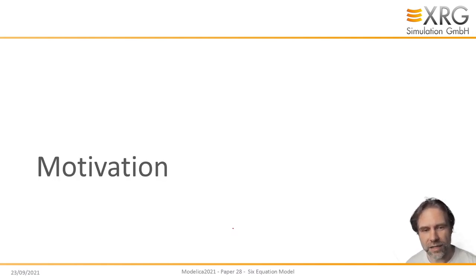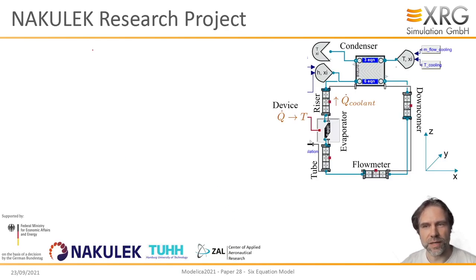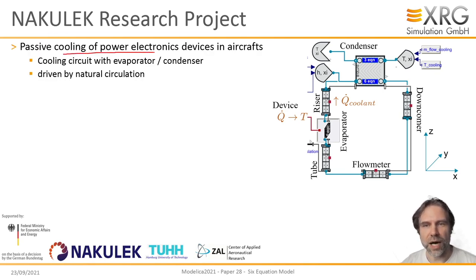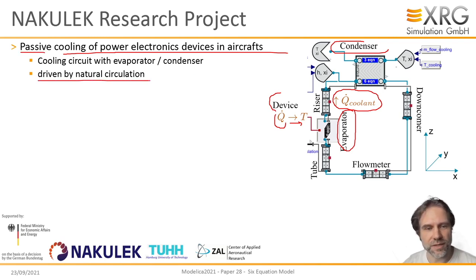So, why should we model two-phase flow in more detail in a system model? The motivation comes from a research project called NAKULEK. This is about the cooling of power electronic devices in aircrafts. You have this classical setting of a cooling circuit with some device emitting heat during operation, exposing temperature to the evaporator, and then the coolant mass flow transports the heat. That device is thought to be passive, meaning driven just by natural circulation.